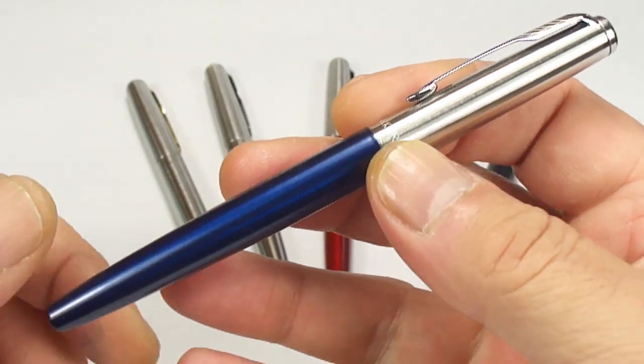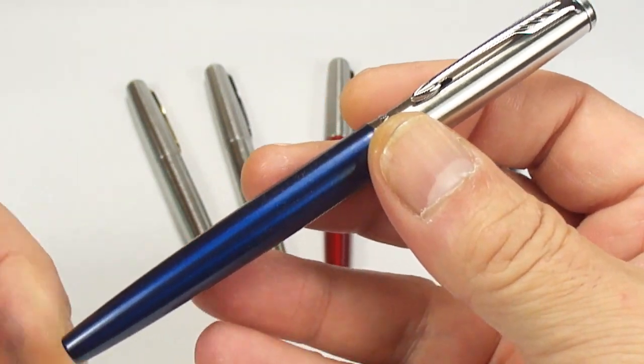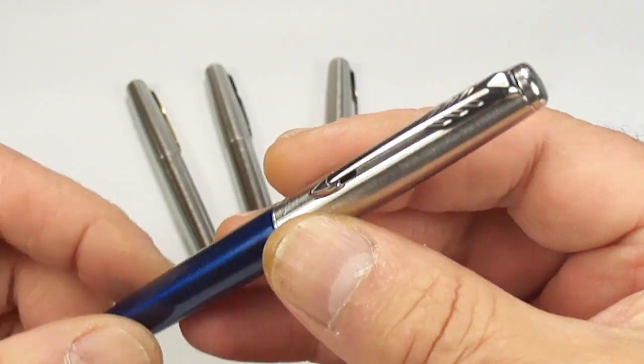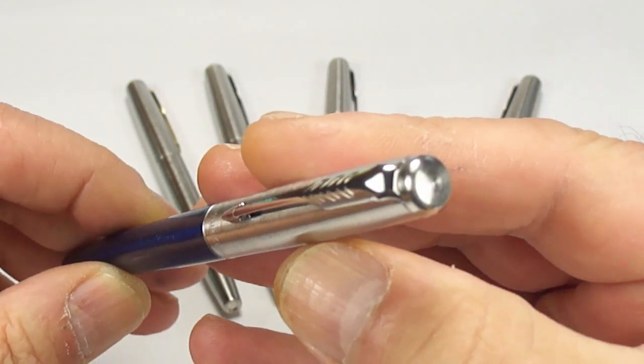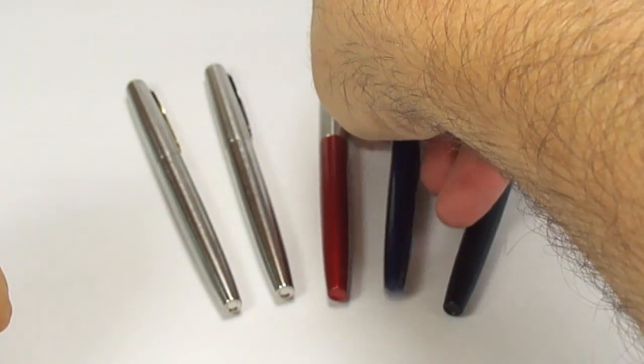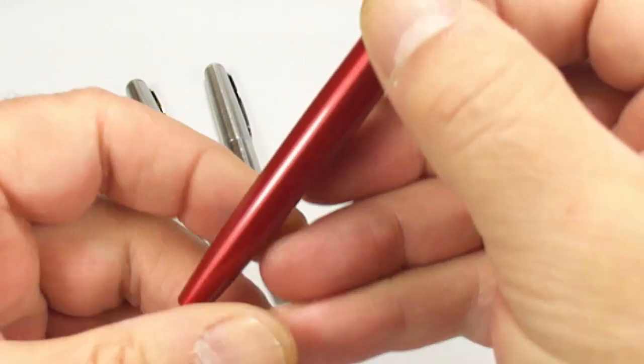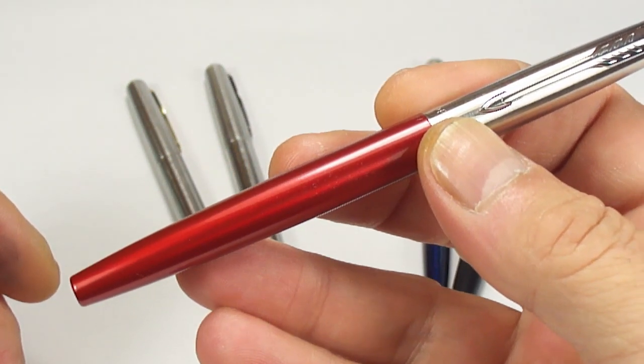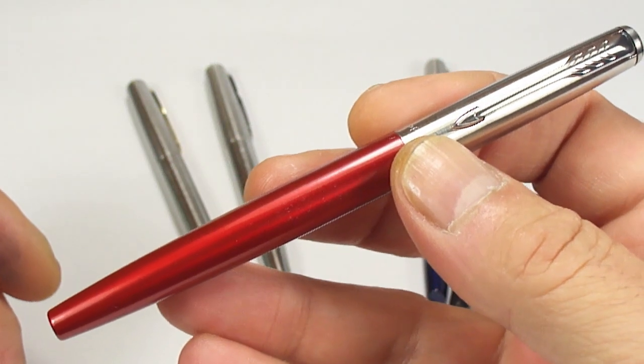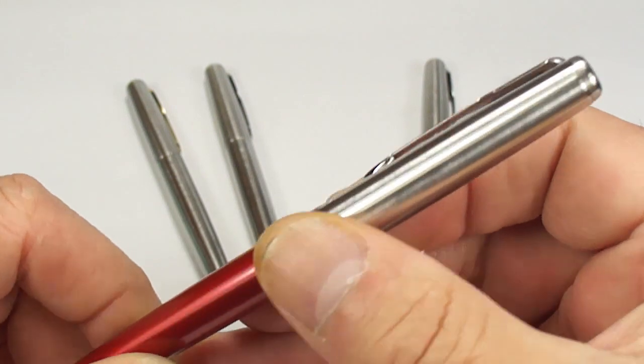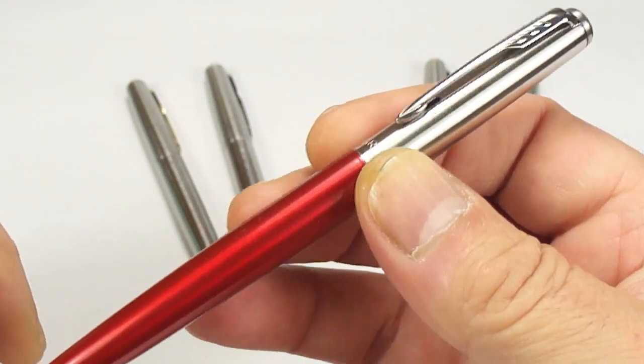The next one within the range we have this lovely blue color and this is the royal blue with chrome trim and again the stainless steel cap, a very nice color indeed. The middle one what we have here is the Kensington red, again chrome trim stainless steel cap in this lovely red color.